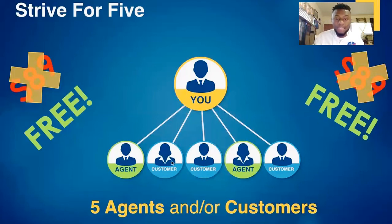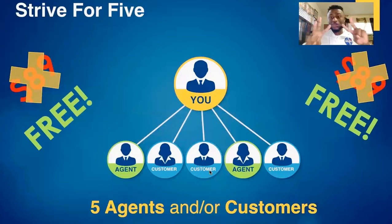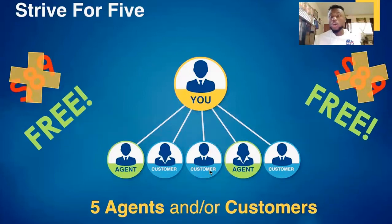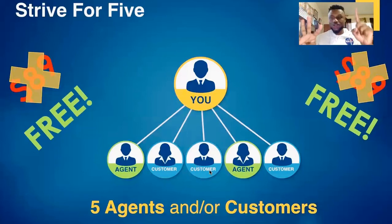So, very simple. If you signed 3 agents and 2 clients, that makes 5. Or 3 clients and 2 agents makes 5. Or 5 clients, or 5 agents. Or 4 clients and 1 agent — any combination of people to get 5 in the system, and your service is free.